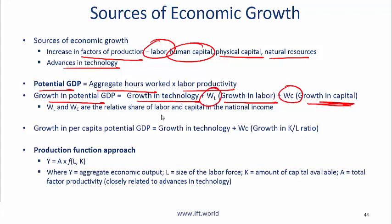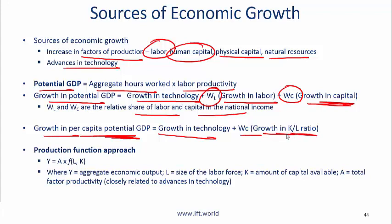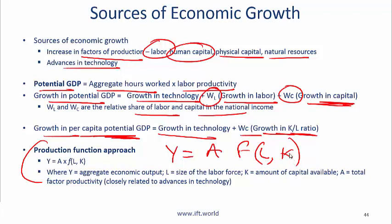The W's in the growth formula represent the relative share of labor and capital in national income — material covered in more detail at Level 2. Economists are also concerned with growth in per capita potential GDP, which is a measure of the actual wealth of a nation. This growth is based on growth in technology and growth in the capital-to-labor ratio. The production function is: output equals A (technology) as a function of labor and capital. Most economists model output in terms of labor and capital.